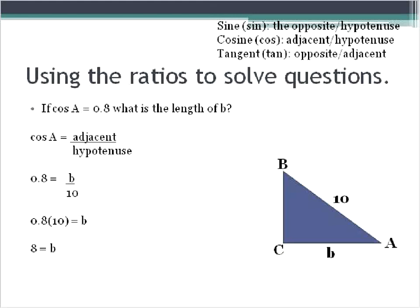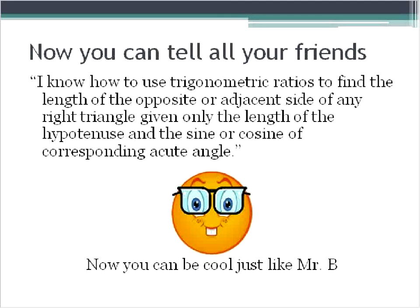And so that is a little bit complicated. But fortunately now that you've seen an example, hopefully you can take this together. I didn't have enough time to make lots of examples. But you can go home to your friends and tell them this. You can tell them, I know how to use a trigonometric ratio to find the length of the opposite or adjacent side of any right angle triangle given the length of the hypotenuse and the sine or cosine of the corresponding acute angle.